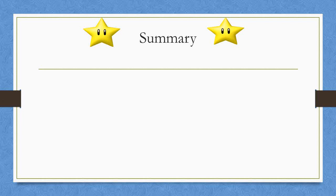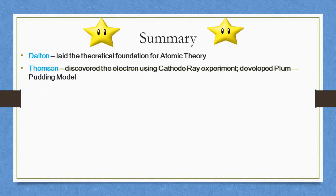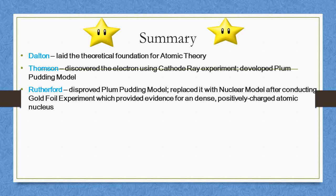We will summarize all the scientists mentioned today. First, Dalton: laid the theoretical foundation for atomic theory. Second, Thomson: discovered the electron using the cathode ray experiment and developed the plum pudding model. Third, Rutherford: disproved the plum pudding model from Thomson and replaced it with the nuclear model after conducting the gold foil experiment, which provided evidence for a dense, positively charged atomic nucleus.